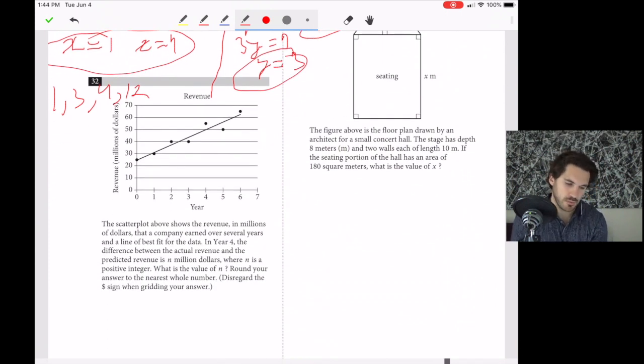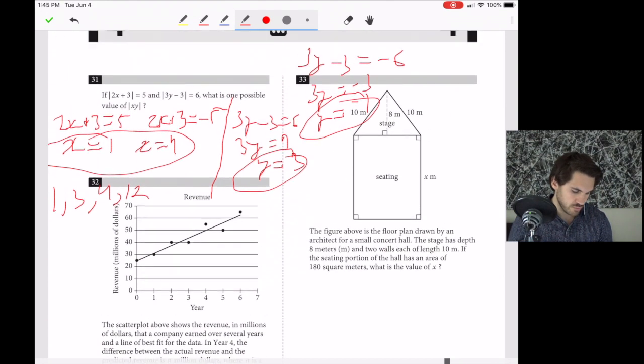Number 32. The scatter plot shows revenue in millions of dollars over several years with the line of best fit. In year 4, the difference between actual and predicted revenue is n million dollars, where n is a positive integer. What is n? At year 4, the predicted revenue looks to be about 50. The actual revenue looks to be about 55. Obviously it's not 100% certain it's 55, so they'll accept answers of 4, 5, or 6.